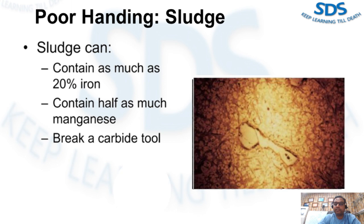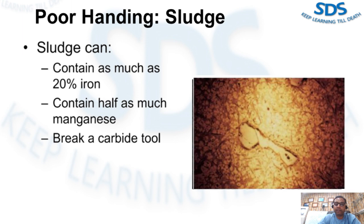Sludge: this figure is an example of sludge, which consists of iron, magnesium, and chromium along with silicon and copper. Sludge can contain as much as 20% iron and half as much manganese, and is hard enough to break a carbide tool. Sludge forms by allowing the metal temperature to fall below the sludge factor for the combination of iron, magnesium, and chromium percentages. If the temperature is too low for those heavy elements, sludge crystals will form and fall to the bottom of the furnace, taking considerable time to go back into solution. The temperature must be raised to dissolve the sludge. Sludge inclusions create poor casting and machining characteristics. To prevent sludge formation, the metal must be held at a temperature higher than the sludge factor.